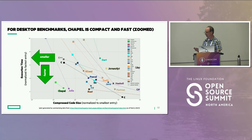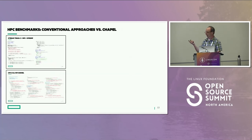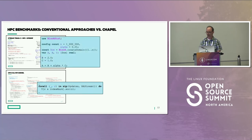One thing that really distinguishes Chapel is that, of all these languages, we're the only one initially designed for parallel scalable computing. Of course, these are just desktop benchmarks — many are serial. What really matters is how do we do once we start scaling? For that I'll return to the two benchmarks I showed earlier — stream triad and random access — and show how they'd be programmed conventionally for supercomputers versus the equivalent Chapel code, which is much shorter and more compact.